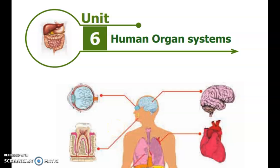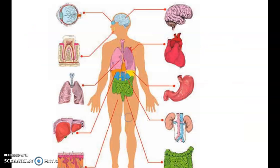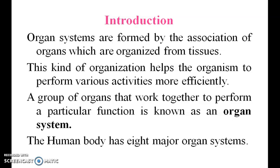Good morning students. Today we are going to see the human organ system. Introduction: organ systems are formed by the association of organs which are organized from tissues. This kind of organization helps the organism to perform various activities more efficiently. A group of organs that works together to form a particular function is known as an organ system.